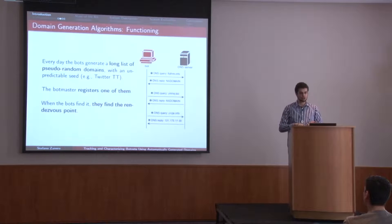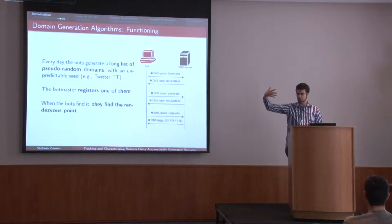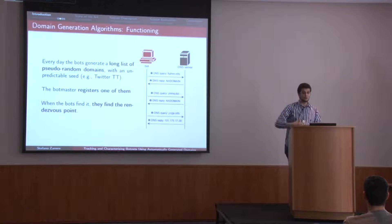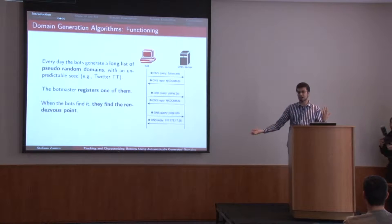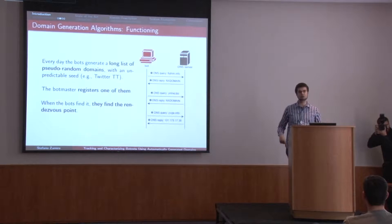If I want to prevent this, I should: one, reverse engineer the algorithm; two, wait every day for the random seed to appear — the trending topics at that time of the day; take those trending topics, run them through the algorithm that I reversed, and be faster than the botmaster in registering or taking down all those 50,000 domains — which in any case costs a lot of money and takes a lot of time.